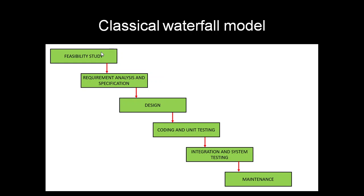Hi all. In the previous lecture, we have seen the classical waterfall model. In this lecture, we will see the iterative waterfall model. In the classical waterfall model, there is a sharp transition from one phase to another phase like this — after requirements, it will be design; after design, it will be coding — there will be a sharp transition.